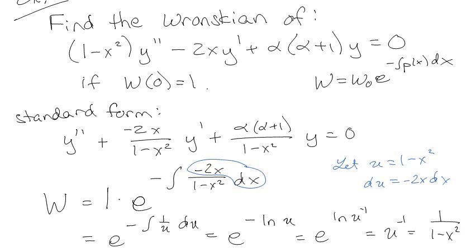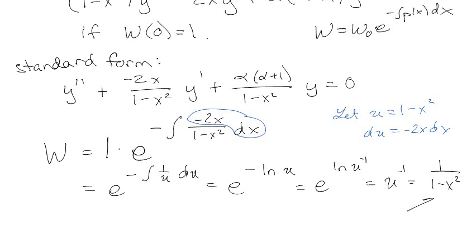So again, finding the Wronskian, this tells you that for x is equal to 1 and negative 1, there's no solution. So you really want to be able to keep an eye out for it. Again, that's kind of why we're looking at the Wronskian, is it helps us define where those solutions are. There's one more fun thing we can do with Wronskians, and that's if you have a solution,